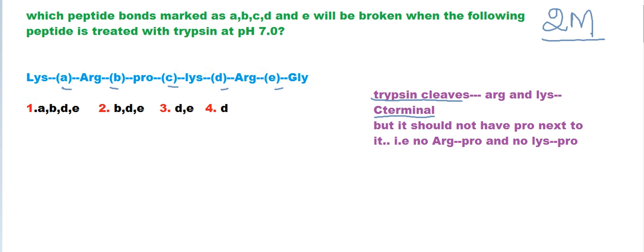Trypsin cleaves arginine and lysine at the C-terminal — this we have to remember. And if the arginine or lysine has proline next to it, then it will not target that peptide bond; it will not cleave that peptide bond.